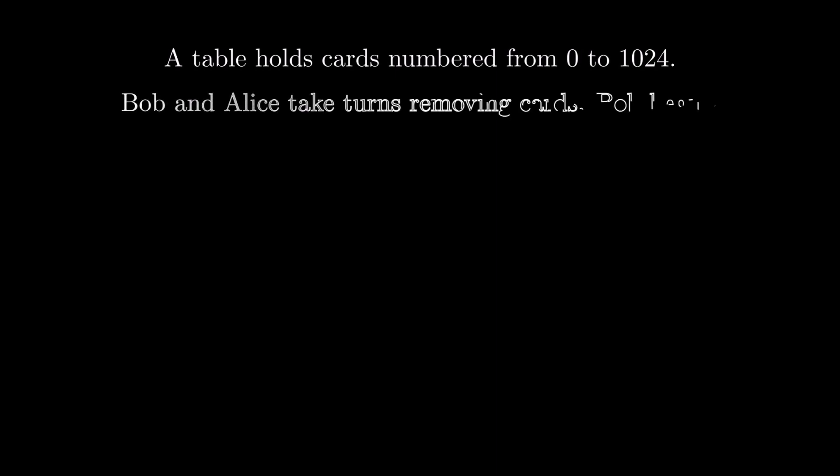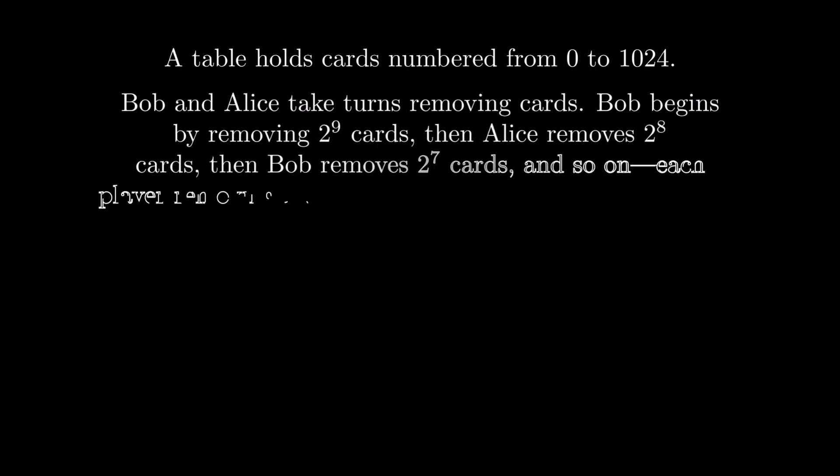Let's consider another problem. A table holds cards numbered from 0 to 1024. Bob and Alice take turns removing cards. Bob begins by removing 2 to the power 9 cards. Then Alice removes 2 to the power 8 cards. Then Bob removes 2 to the power 7 cards. And so on, each player removing half as many cards as the previous move.